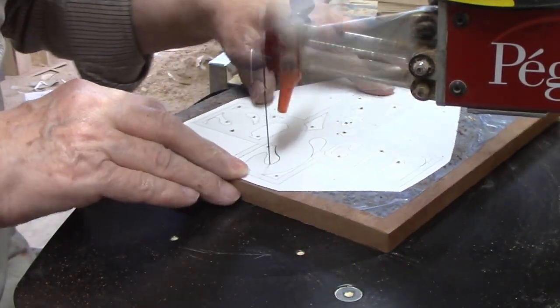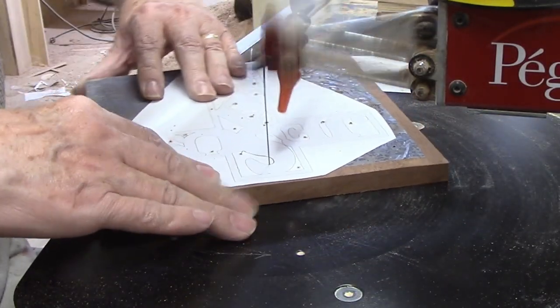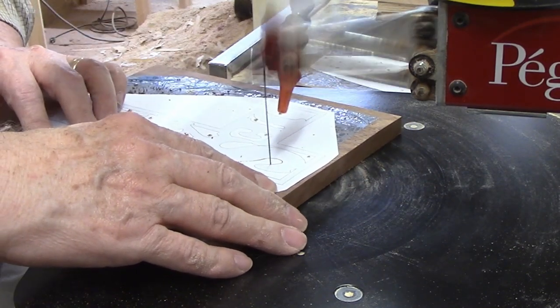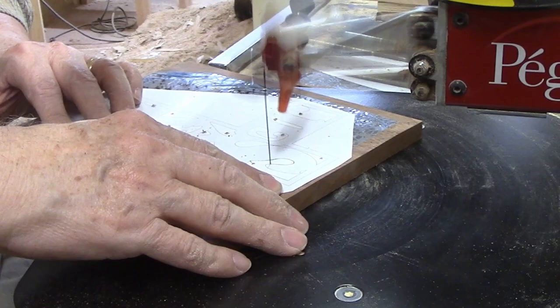As always I'll do the inside cuts first but it doesn't matter where I start on them. I chose to start at the top. With half-inch stock and a number five blade I can make all the cuts needed for this piece.